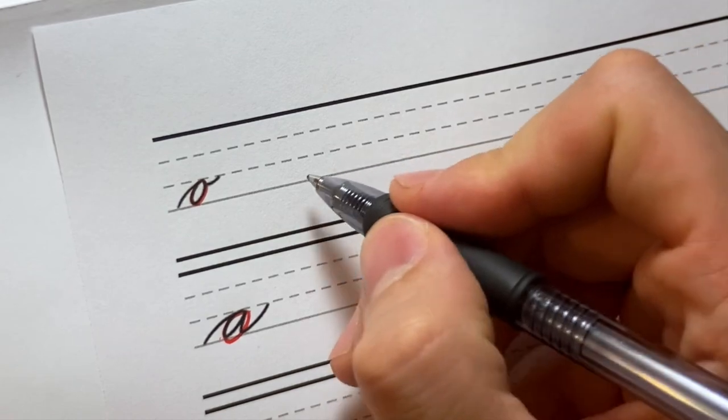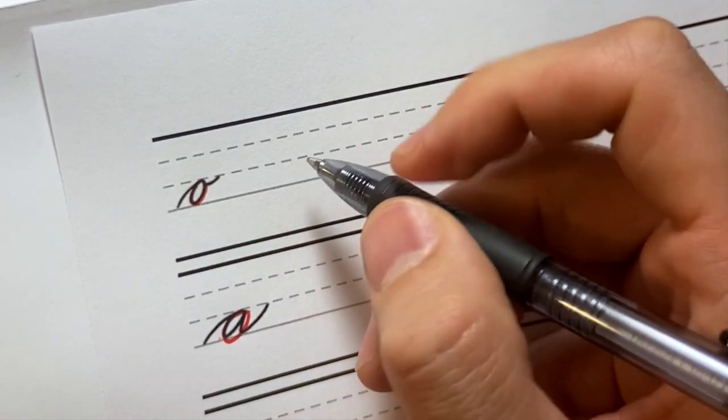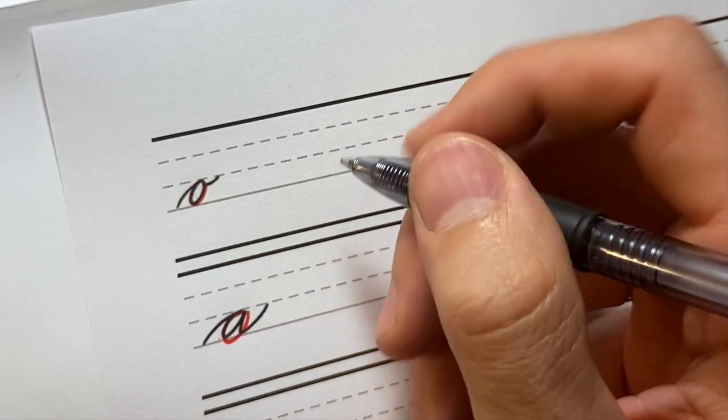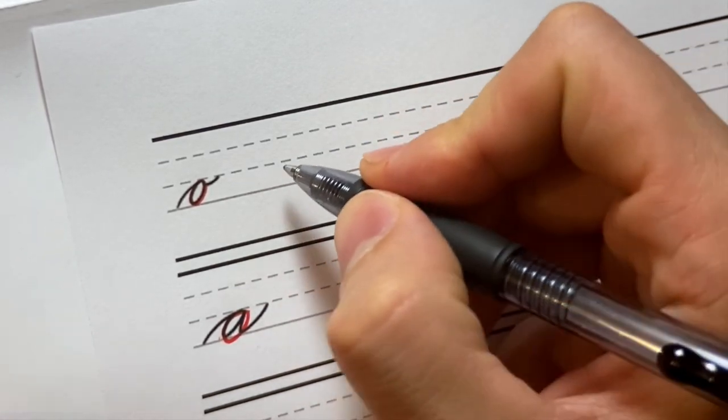Just making the O very simple. This is a different type of entry stroke than we've seen so far. So we've been doing under turns with our I, U, W, and E to enter letters. Now we're going to do an overturn.